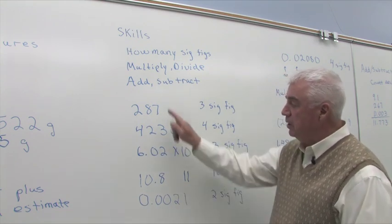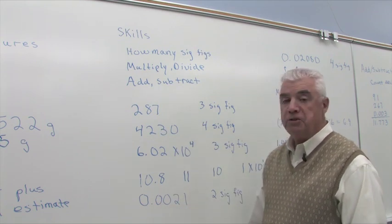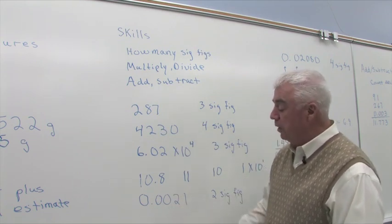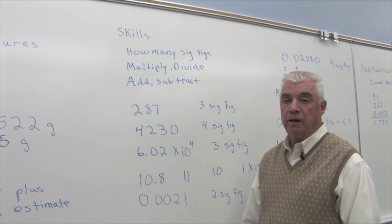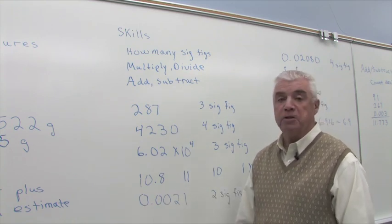Let's skip down just a little ways. Both of these numbers are greater than one. What if we had a number less than one? 0.0021. Well, we both know that this zero is not significant.